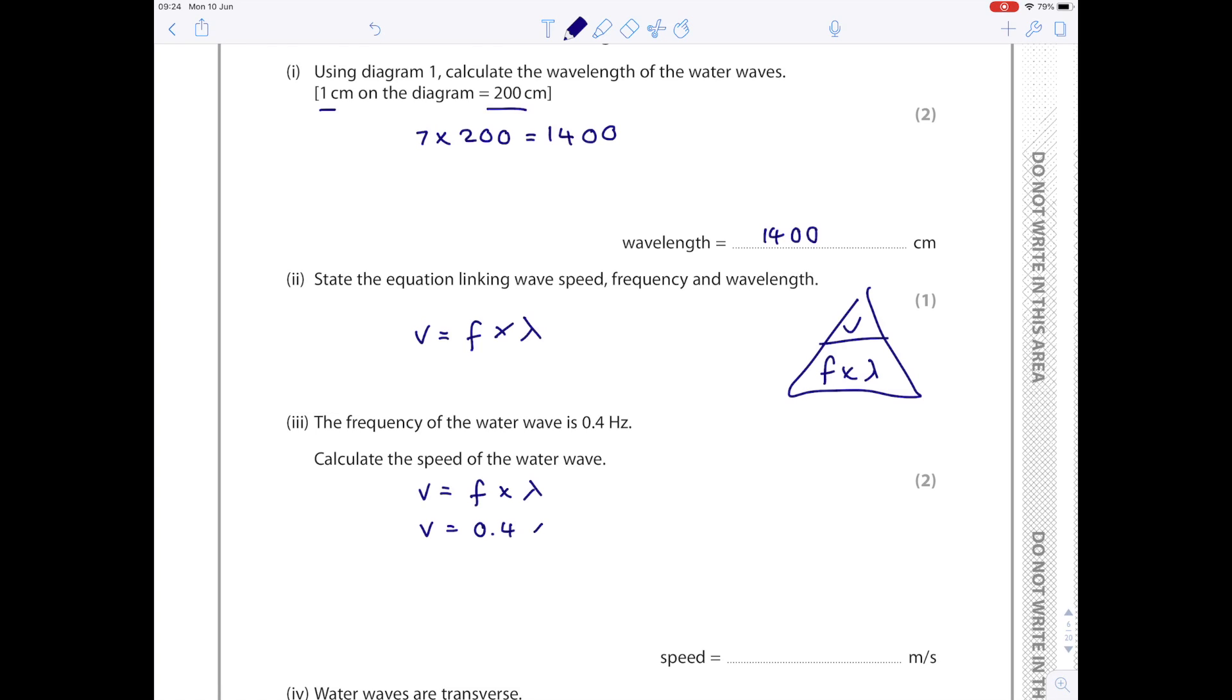Quickly check your units. We were given our wavelength in centimeters, but we need our final in meters per second. We need to convert 1400 centimeters to meters by dividing by 100. Once you've done this, you get a value which is 5.6 meters per second.